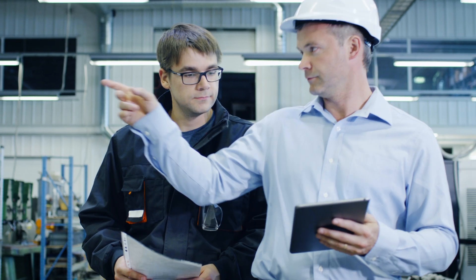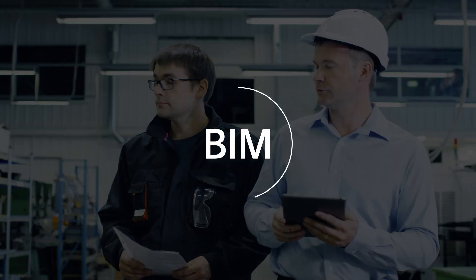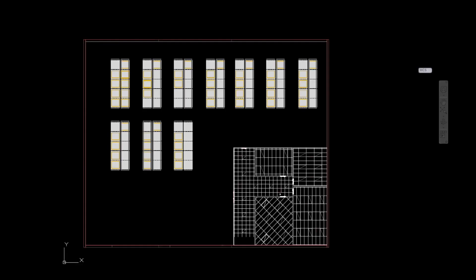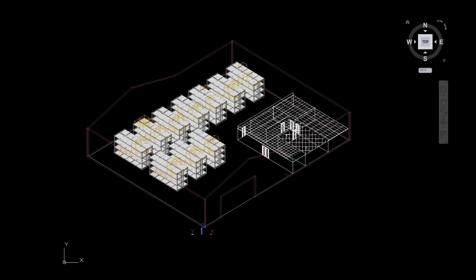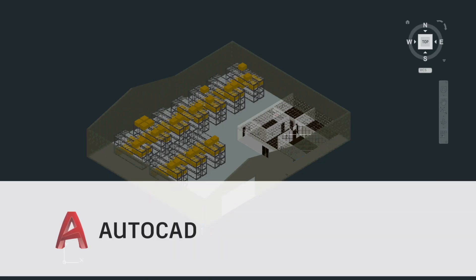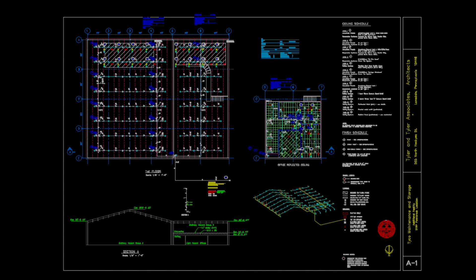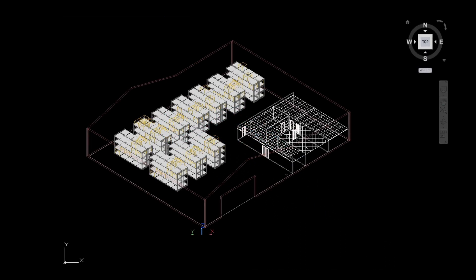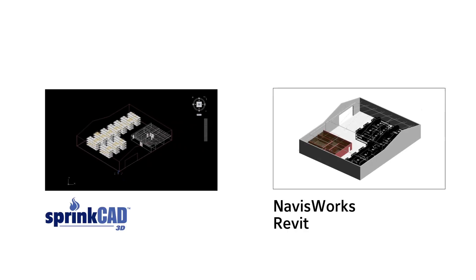The SprintCAD software suite is engineered to ensure coordination with building information modeling systems. Simply import architectural, structural and trade backgrounds and you're ready to go. SprintCAD works with AutoCAD and BricsCAD, allowing you to seamlessly design in the industry standard 3D environment and is compatible with legacy SprintCAD files to take advantage of prior project designs. You can also use BIMPORT to export SprintCAD files to Navisworks and Revit.